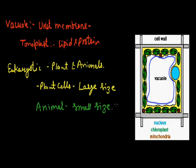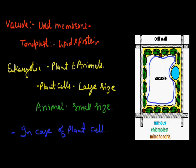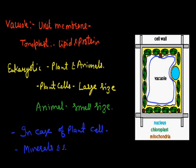The vacuoles are responsible for maintaining the water and mineral balance in the cell. In the case of the plant body, vacuoles play a very vital role in maintaining the mineral and water balance inside the cells, because vacuoles are the only structure which have the capacity to store water inside the plant body.